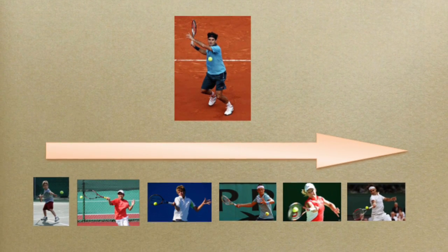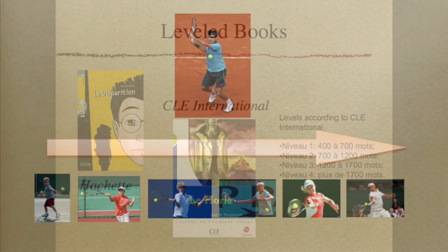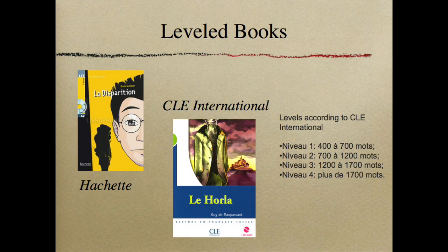So how do we do this in learning a second language? We read what are called leveled books or easy reading books, which have certain vocabulary levels. We find what our vocabulary level is, start reading at that level, and read a lot of books — about 10 books in that level. Then we read a book at the next level up. We go from level 1 (about 400 to 700 words) to level 2 (700 to 1200), and slowly but surely move up levels and get better and better.